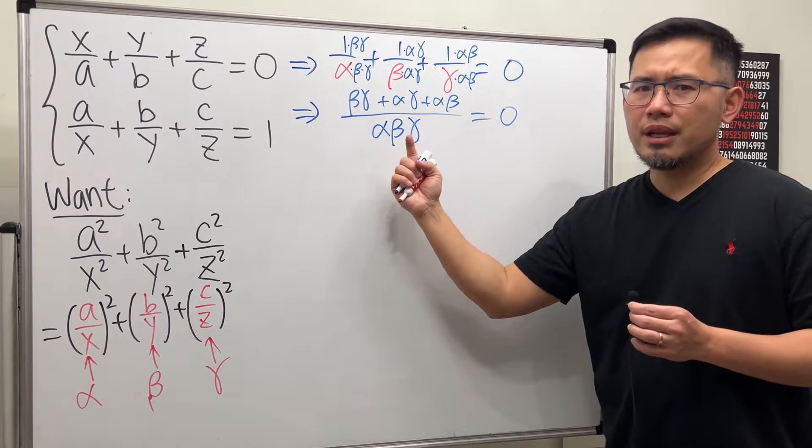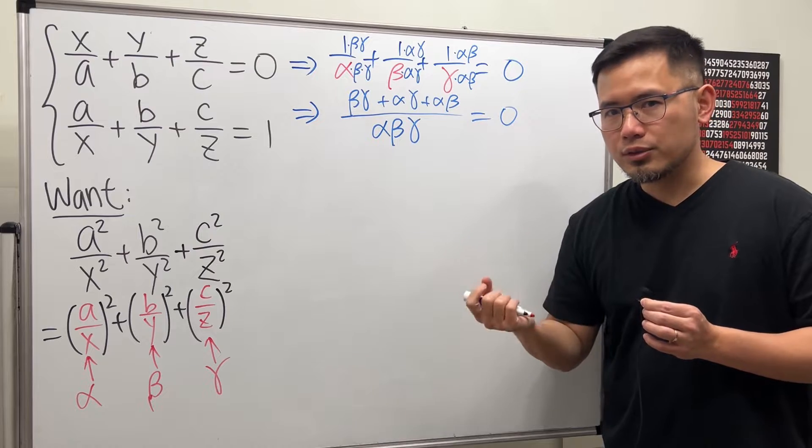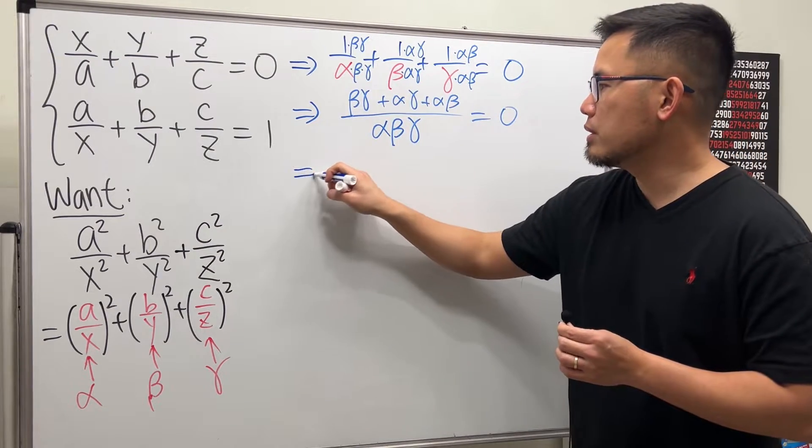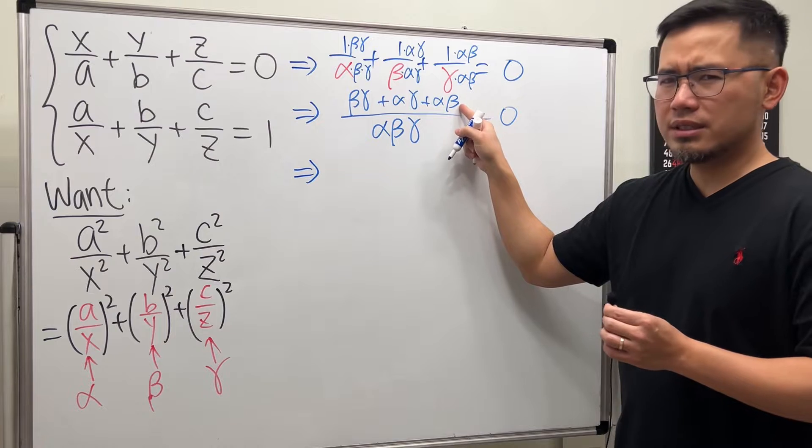Here we have a fraction, and it's equal to 0. The only way for this to happen is the numerator is equal to 0. So we must have. Let's write this down first, yeah?